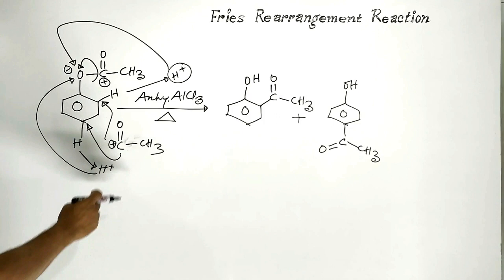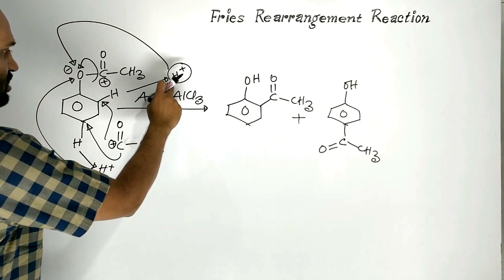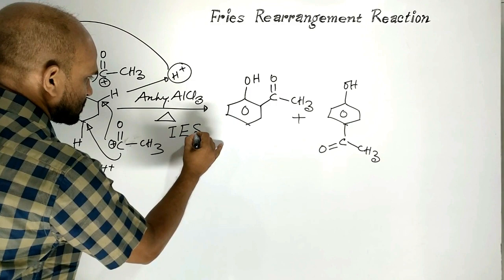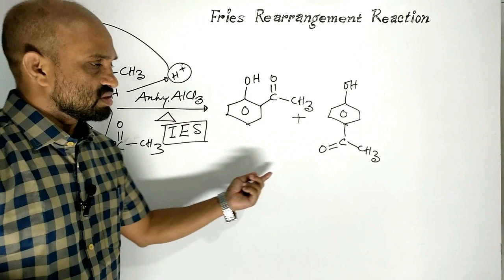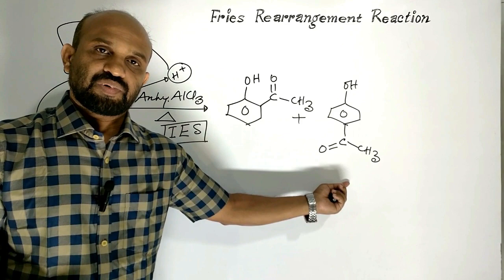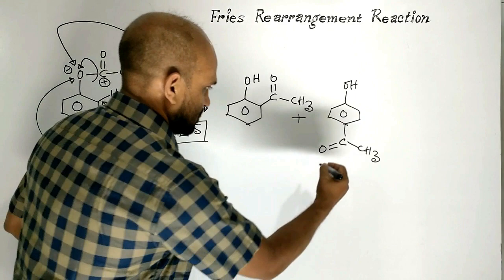This electrophile bonds to this carbon, and at the same time from this carbon hydrogen gets freed as a proton — that is, internal electrophilic substitution occurs in Fries rearrangement reaction. Phenyl acetate undergoes Fries rearrangement reaction to form orthohydroxyacetophenone, parahydroxyacetophenone, orthoacetylphenol, or paraacetylphenol.